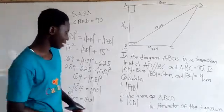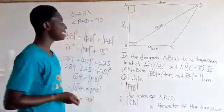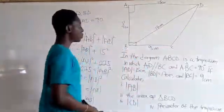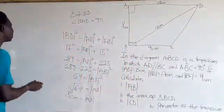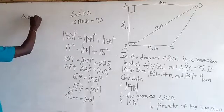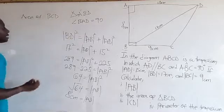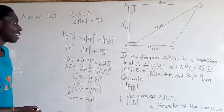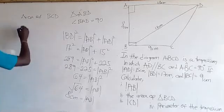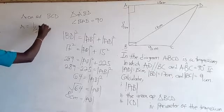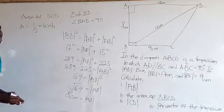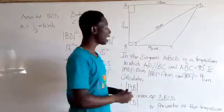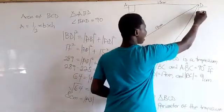The follow-up question asks us to find the area of triangle BCD. Looking at triangle BCD, the area of a triangle is half base times height. We are not immediately seeing a height, so we can extend one side to get the height.